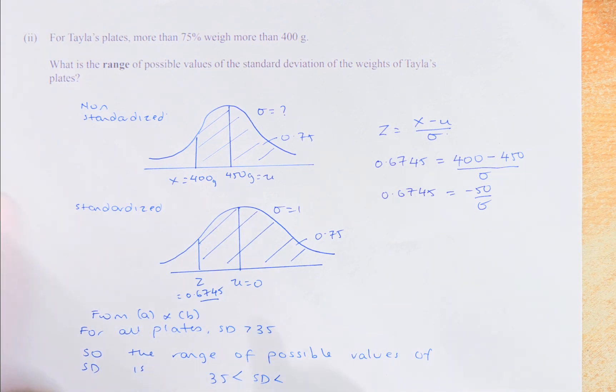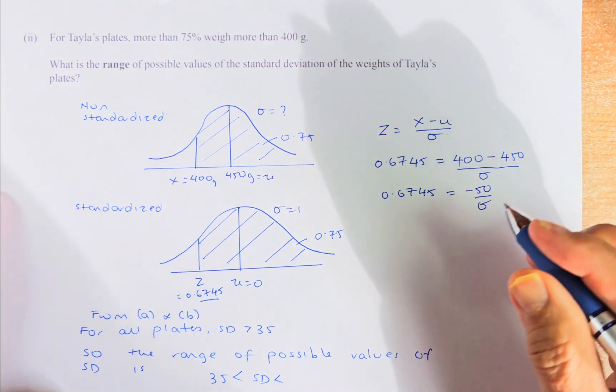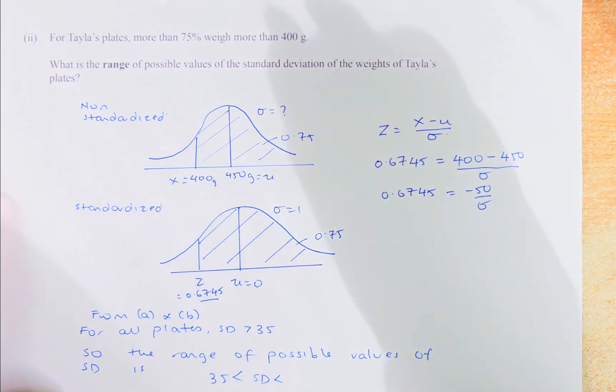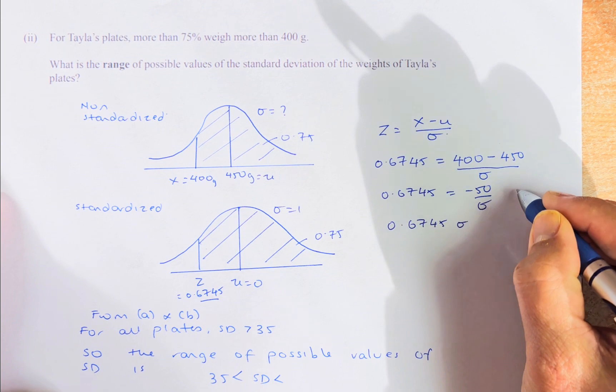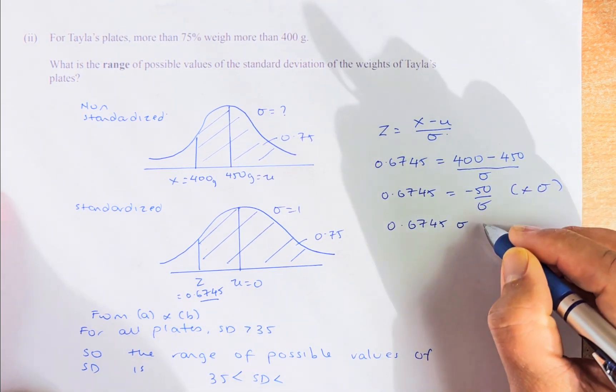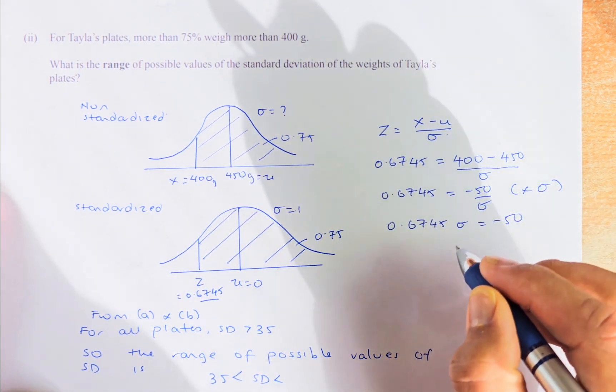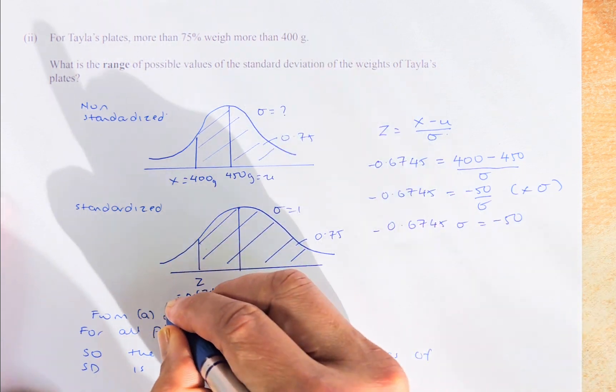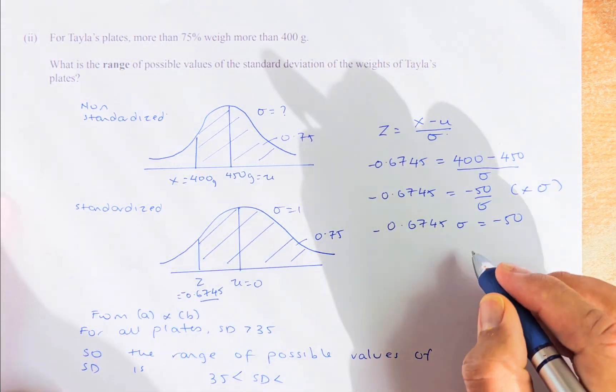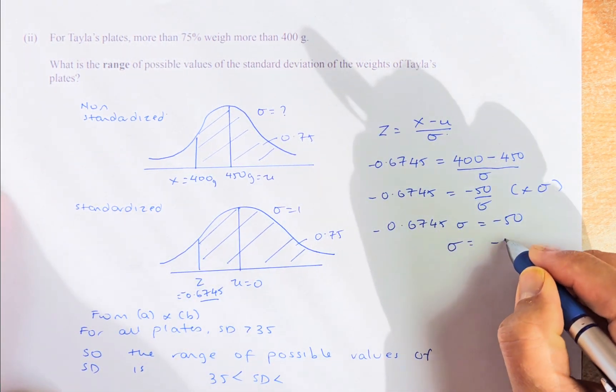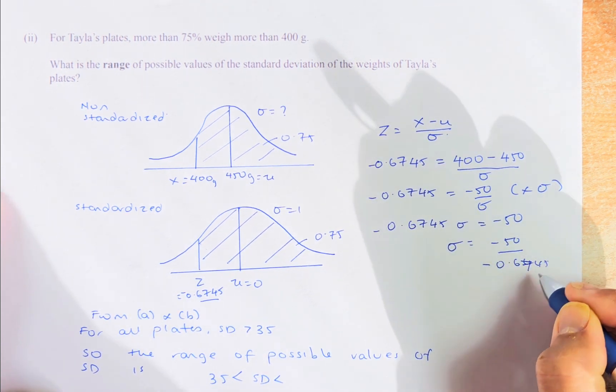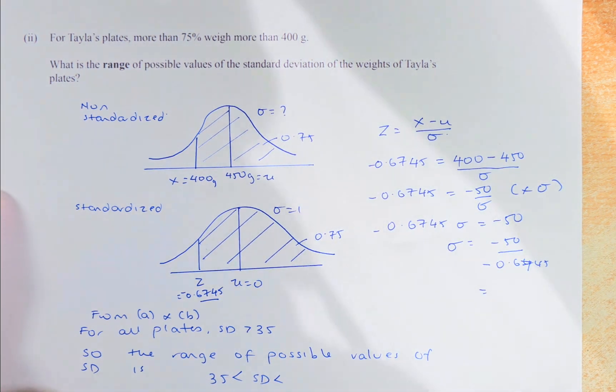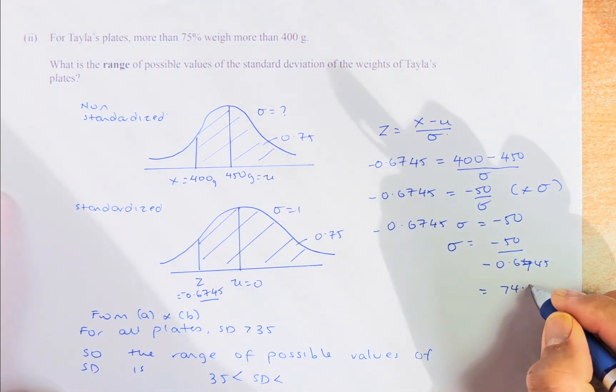0.6745 equals to minus 50 over sigma. Because 400 minus 450 is minus 50. Now what we're going to do, we're going to multiply sigma on both sides. Or you can go direct to solver, but I'm going to use a long way method. 0.6745 sigma equals to negative 50. To get sigma, you take minus 50 divided by negative 0.6745, put in your calculator, and that should give you 74.12.